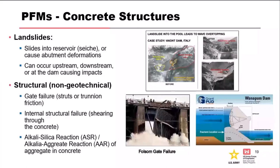Non-geotech failure modes also considered in risk assessments include gate failure and trunnion friction — trunnions are the pins gates rotate on, and they can lock up, shear, and fail, as happened at Folsom. Internal structural failure through the concrete at lift lines or rebar installations — that's Wanapum, which happened about a decade ago. ASR (alkali-silica reaction) — site characterization helps if you know where aggregates came from and whether they contain amorphous non-crystallized silica, which can react with hydroxide ions in the concrete.